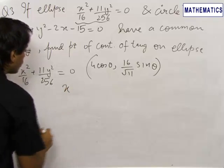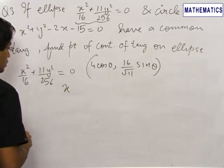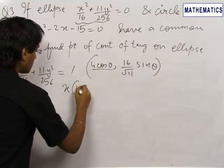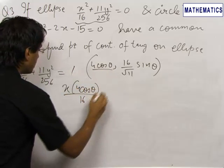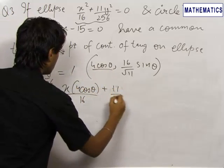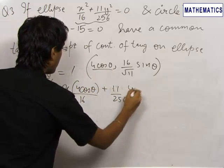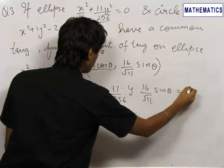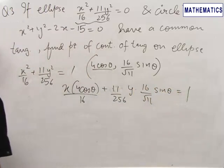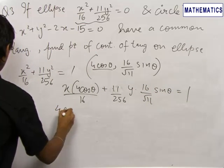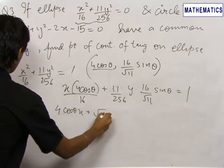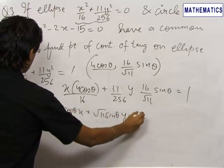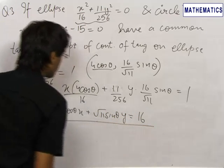The tangent equation is xx₁/a² + yy₁/b² = 1. So this becomes x·x₁/16 + y·(16/√11 · sin θ)/b² = 1, which on solving gives: 4 cos θ · x + √11 sin θ · y = 16. This is the equation of the tangent to the ellipse.